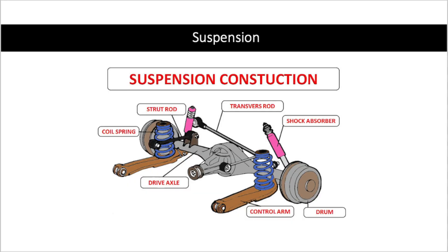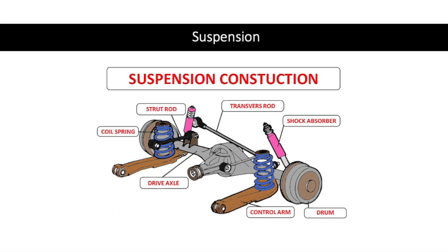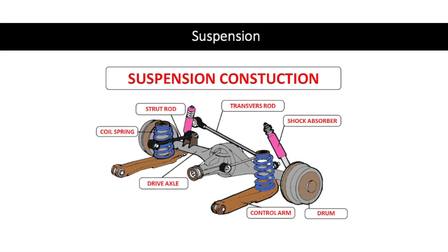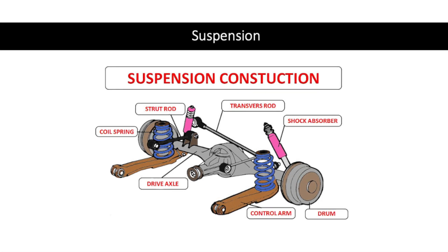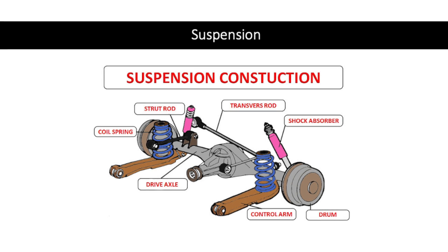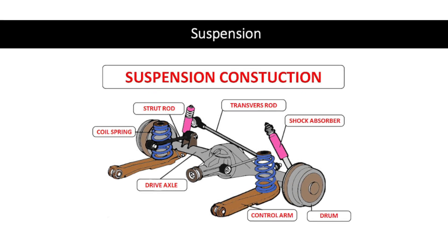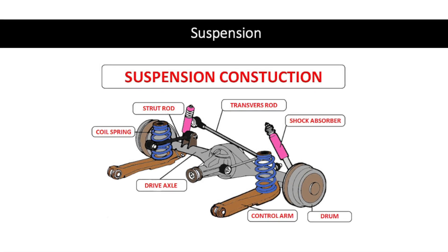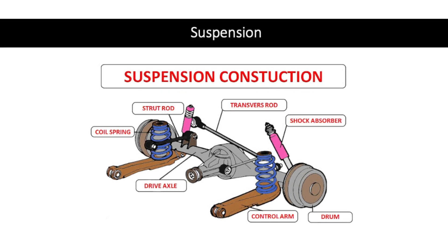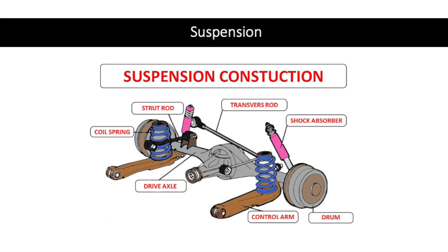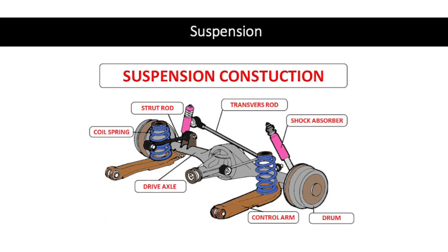The suspension system consists of a series of springs, shock absorbers, and linkages that connect the car's wheels to the chassis. It is responsible for absorbing bumps and vibrations while also keeping the car's wheels in contact with the road.